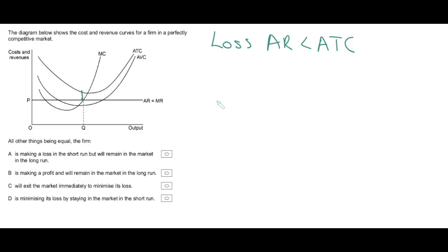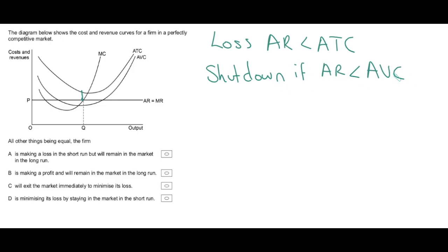However, this clearly links to the shutdown condition. That's why AVC is on this diagram. We know a firm should definitely shut down if average revenue is less than average variable cost. Is that happening here? No, because average revenue is there at quantity Q but average variable cost is down below. So average revenue is greater than average variable cost, meaning continuing in the short run is in the best interest of this firm.